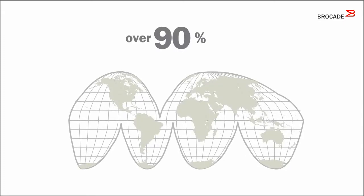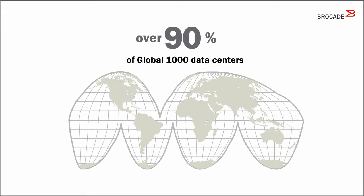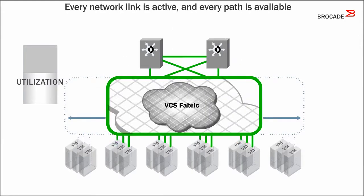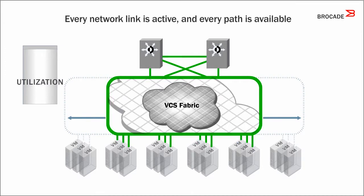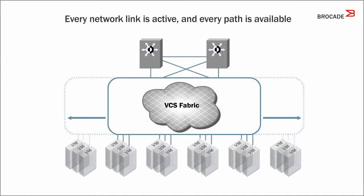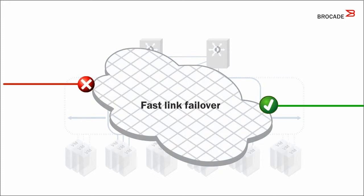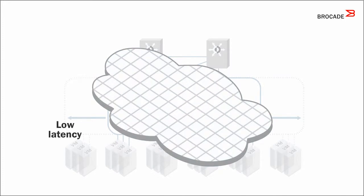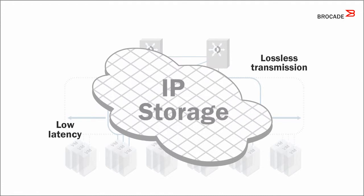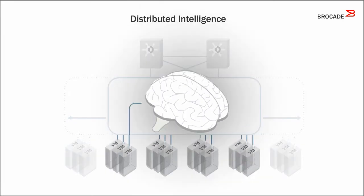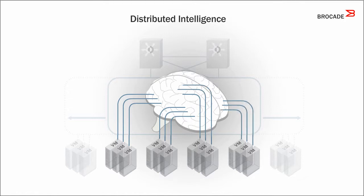Brocade VCS Fabric technology can transform your data center LAN into a high-performance, scalable, and resilient Ethernet fabric. It leverages Brocade's heritage and expertise in Fiber Channel fabrics used in more than 90% of Global 1000 data centers. With Brocade VCS Fabric technology, every network link is active and every path is available with no configuration required. The fabric is masterless, providing fast link failover, resulting in low latency, lossless transmission for both IP and storage traffic.